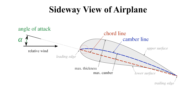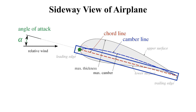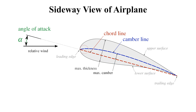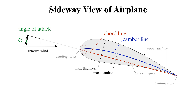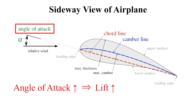Airfoils have a so-called chord line. A chord line is an imaginary straight line from the leading edge to the trailing edge of an airfoil. When an airfoil moves through the air or there is a wind, the airfoil experiences relative wind. Relative wind is in the opposite direction of and parallel to the flight path of an airfoil. When you draw the vectors of relative wind and chord line, the resulting angle is the angle of attack. By increasing the angle of attack, the pilot can increase the lift of an airfoil, but only up to a point.